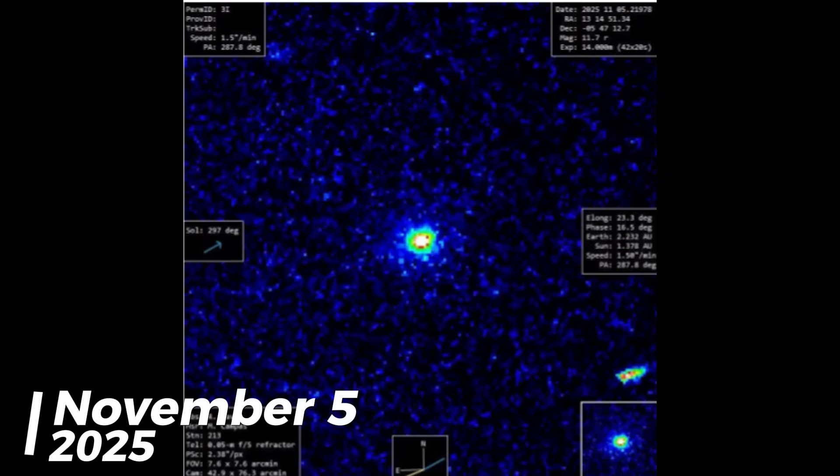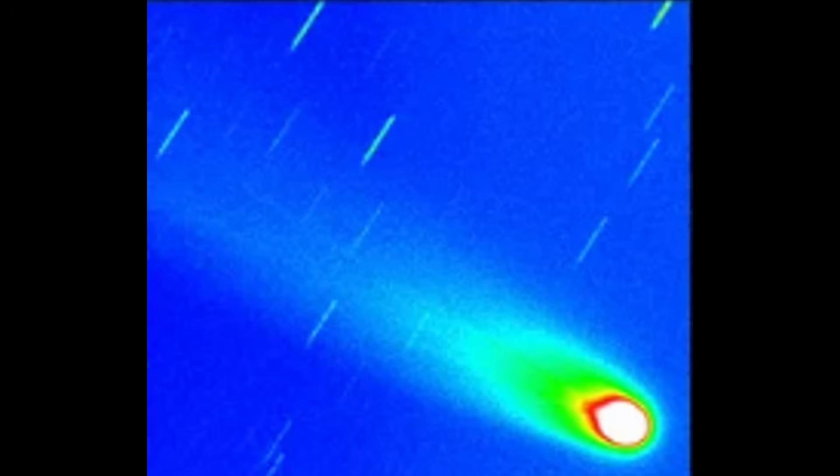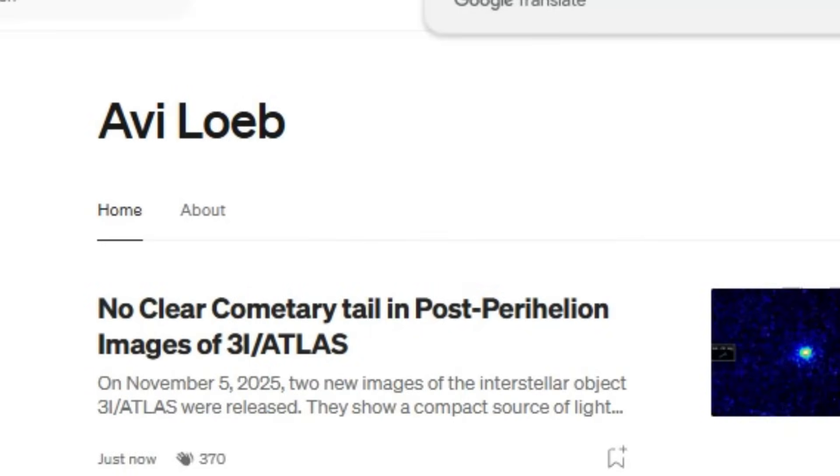On the 5th of November, 2025, two new images of the interstellar object 3i Atlas were released by the Virtual Telescope Project. What these images revealed left the scientific community even more perplexed.